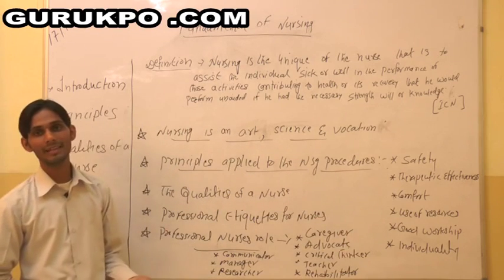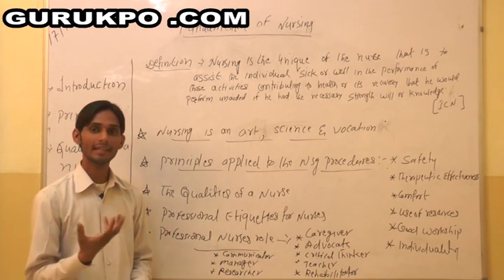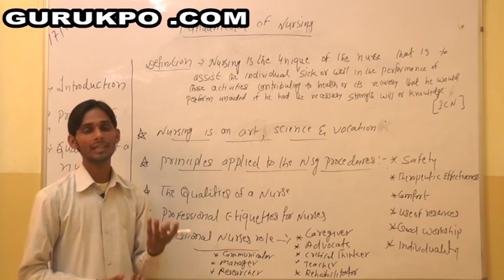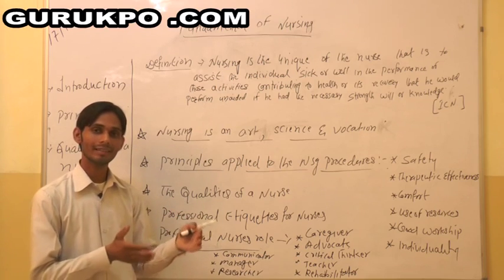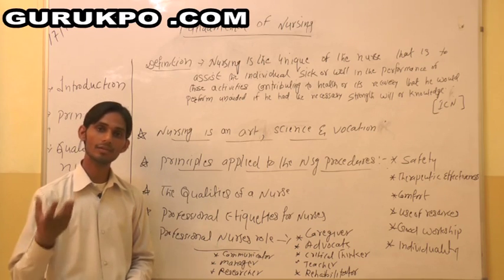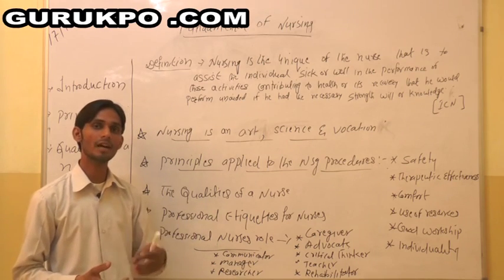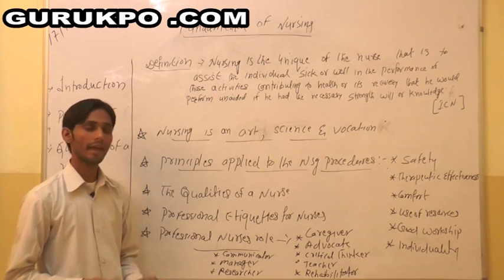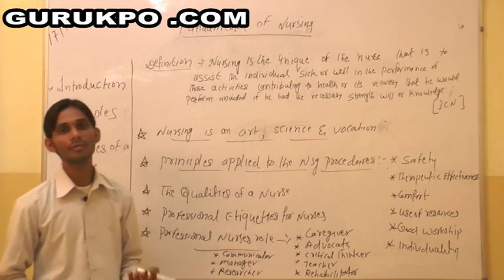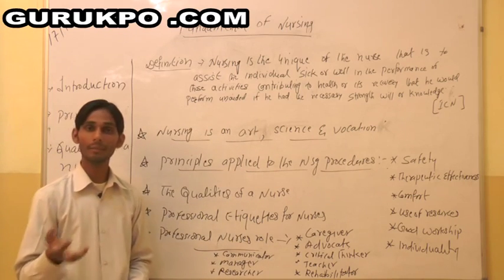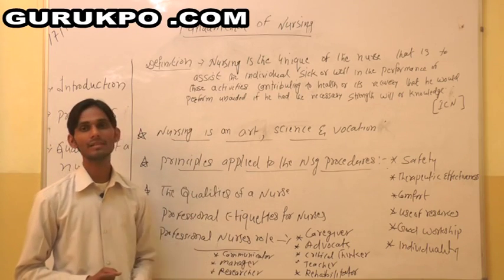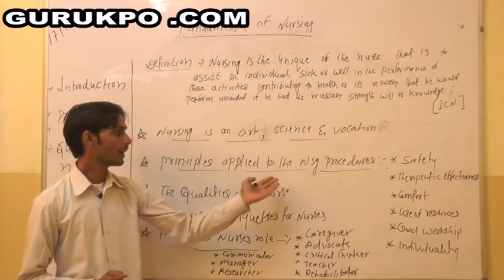Next, good workmanship — we have to work as a team member. Alone, a nurse cannot do anything. The team includes doctors, nurses, pharmacists — everyone is included. She has to cooperate, take messages from junior staff and senior staff, and pass information to everyone. Next, individuality — whoever the client in the hospital is, whatever particular care they need, we have to provide it to them. These are the principles applied to nursing.